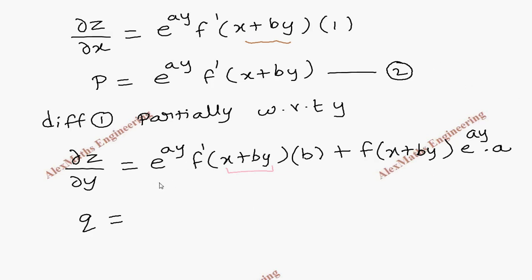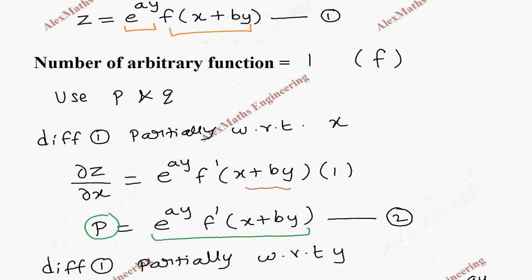We find e^(ay) · f'(x + by) here, so there is nothing but P. So we can substitute this as P, then the remaining term is b.